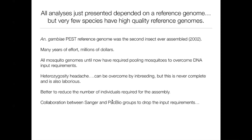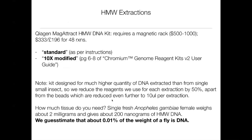To some extent, variation can be overcome by inbreeding — if you can do multiple generations of inbreeding, this helps, but it's never fully complete and it's a lot of work. For mosquitoes, it's proved incredibly difficult — they're very reluctant to inbreed and often die off pretty easily. The better approach would be to reduce the number of individuals required for generating a long-read assembly down to one, and that was the origin of this collaboration we started last summer with PacBio.